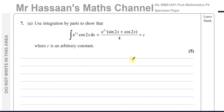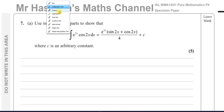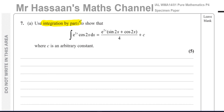This question is about integration by parts. They've told us to use integration by parts to show that the integral of e to the power of 2x times cosine of 2x with respect to x gives a specific result, where c is an arbitrary constant.